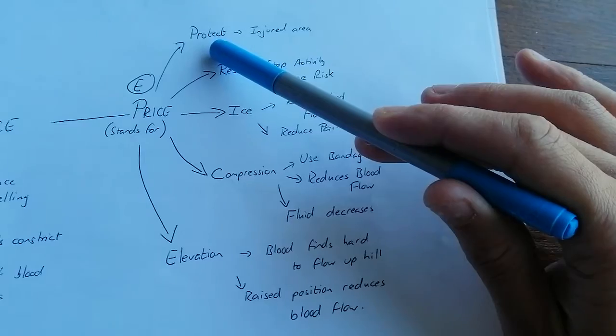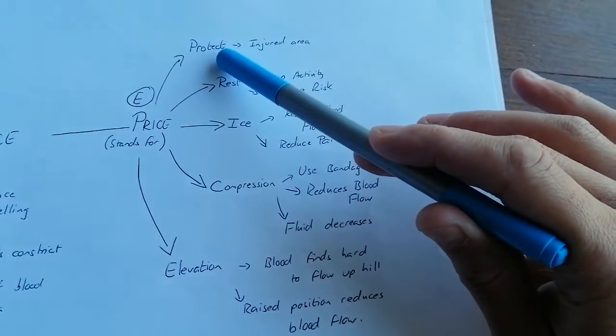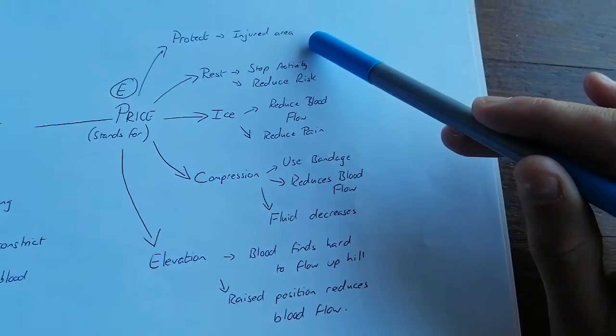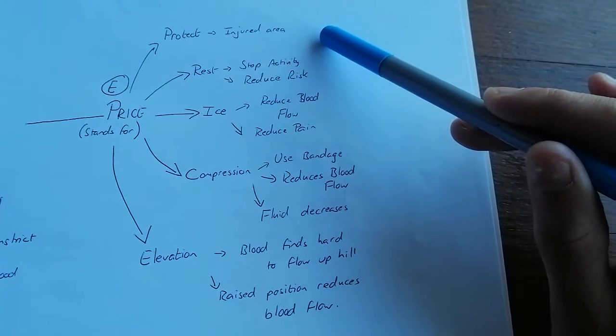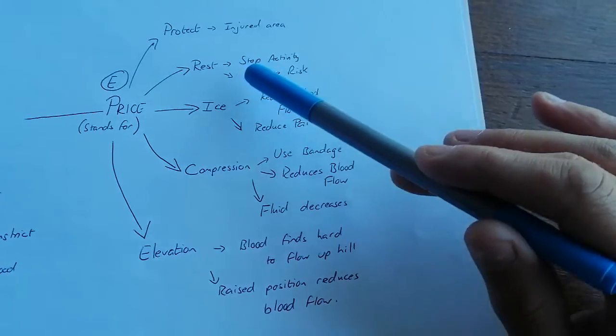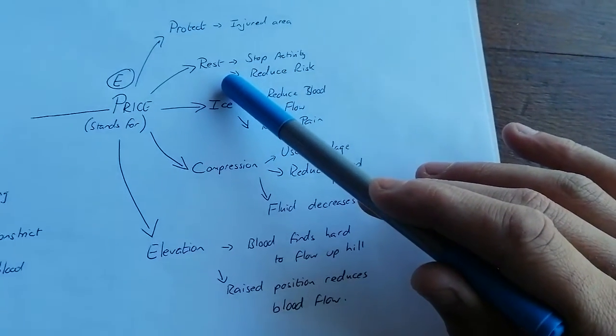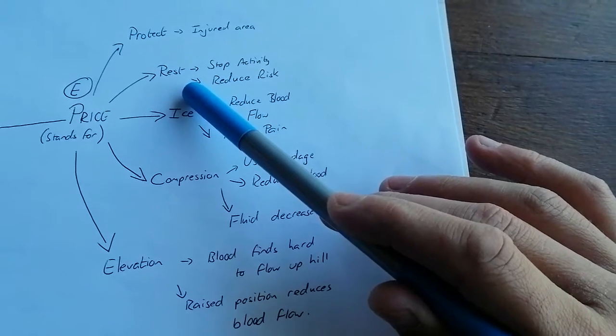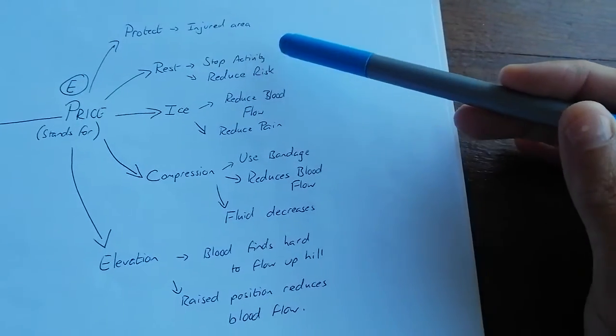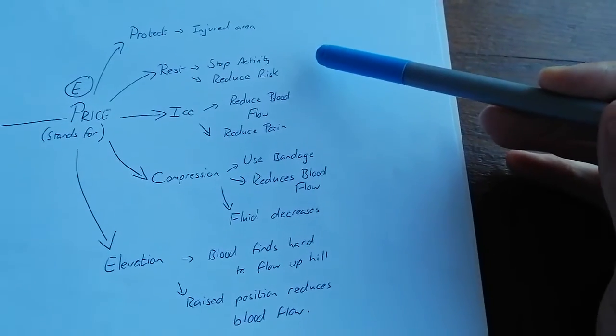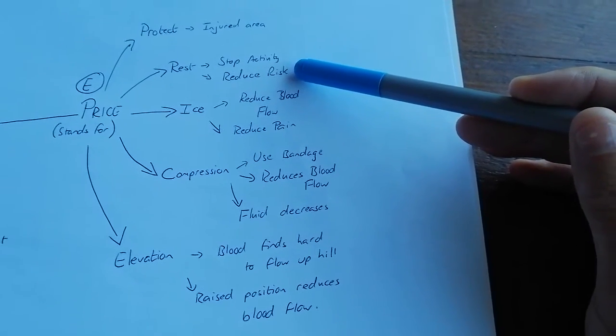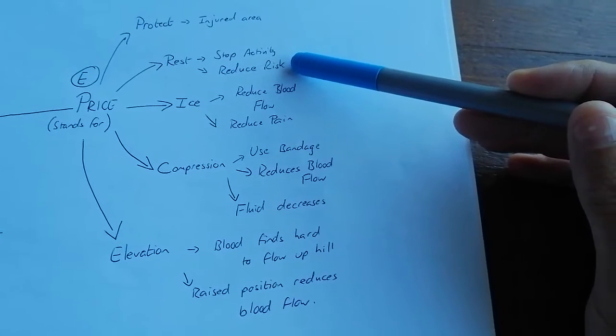You would again write the word protect. Protect means to protect the injured area from any further damage. You could do this by removing the player from the sports pitch. Rest means once the athlete has been removed from the area or after the activity. So, either by stopping the activity or after the activity because they've been able to continue. And you do this to reduce the risk of further injury and to give the injured area a break.